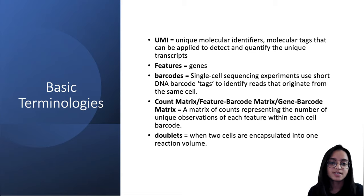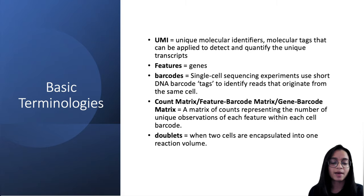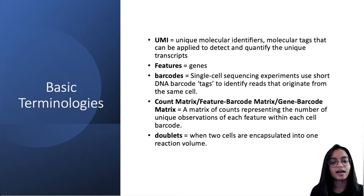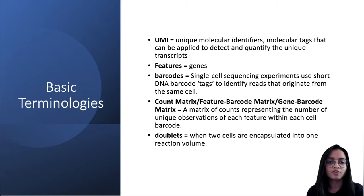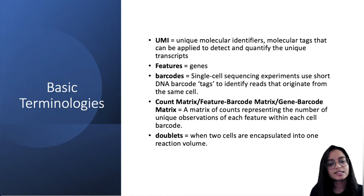A count matrix, feature barcode matrix, or gene barcode matrix is a matrix of counts that represents the number of reads which map to each feature or gene within each cell. I have a separate video explaining how gene expression is measured and how a count matrix is generated for bulk RNA-seq data — check the description for the link. Lastly, doublets occur when two cells are encapsulated into one reaction volume.